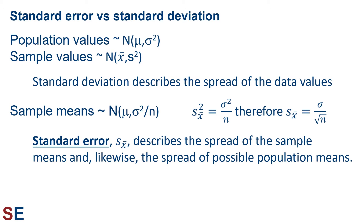The terms standard deviation and standard error are very similar, but they measure completely different things. The first one measures the spread of data values in the population or sample. The second measures the spread of sample means taken from a population.